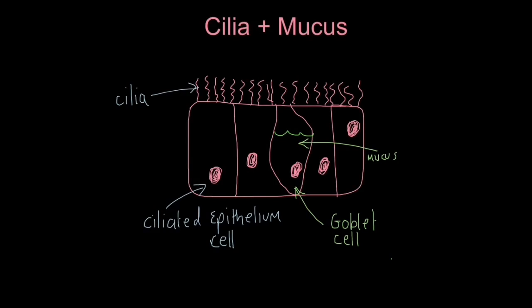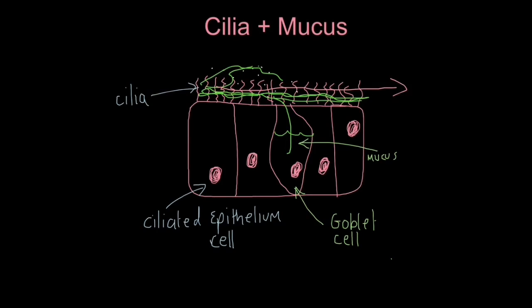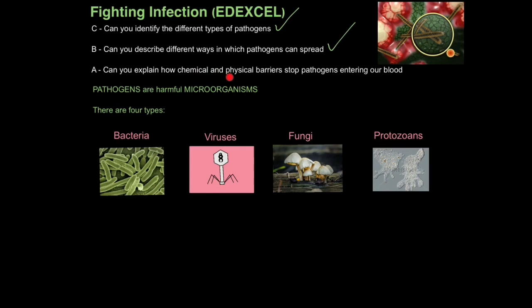This green stuff is mucus. Imagine you've just breathed in and flooded your respiratory tract with pathogens — these pathogens get stuck in the cilia because the goblet cells secrete mucus that forms a layer at the base of the cilia cells. The mucus traps the bacteria, and then the cilia sweep the bacteria up towards our mouth where we swallow them. The bacteria then get into our stomach where the stomach acid destroys them. Now you should be able to explain how chemical and physical barriers stop pathogens entering our blood, where they can do most damage.